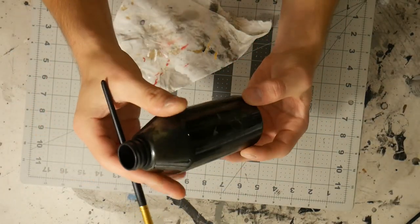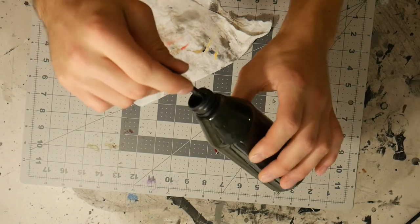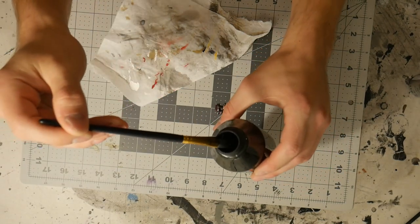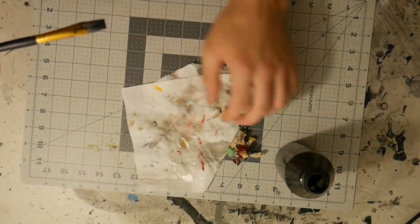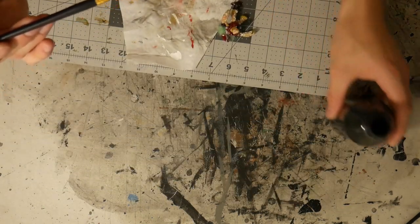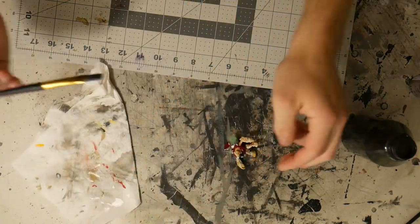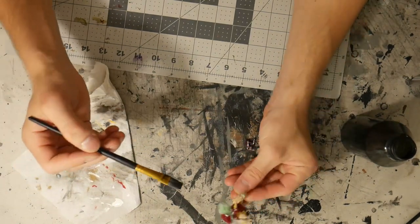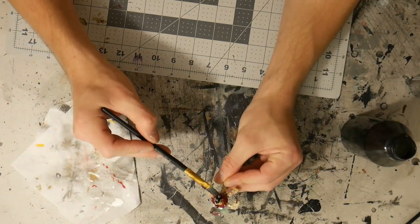So this is black paint mixed with water. I've had this for a super long time and it's really simple. All you do, let me get this off the mat. All you do is take the black paint and water, dab your brush, and go over the figure.